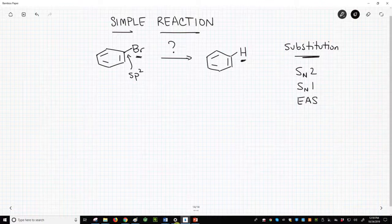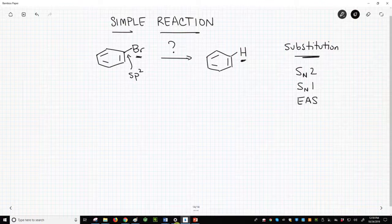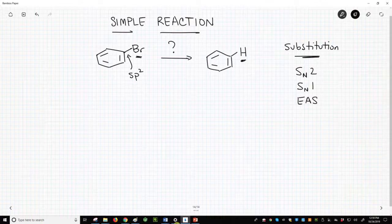This sounds promising because we do have an aromatic ring. Unfortunately, EAS reactions replace hydrogens on the ring with something else. Instead, we want to add a hydrogen. We need a new reaction and organometallics are going to get us there.